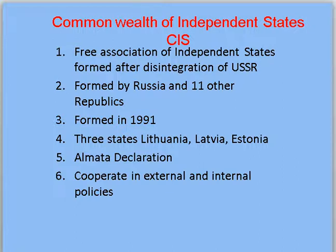When Ukraine, Belarus and Russia declared the end of the USSR, the rest of the republics — 11 republic states — joined together and formed CIS. There were three states, Lithuania, Latvia and Estonia, who refused to join CIS. A common exam question asks: name the three states who refused to join CIS.